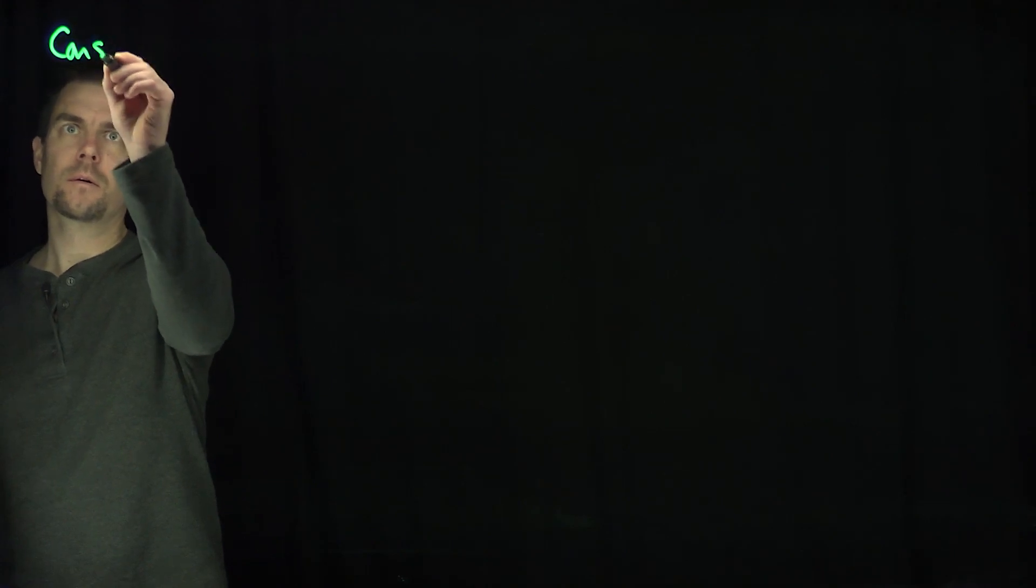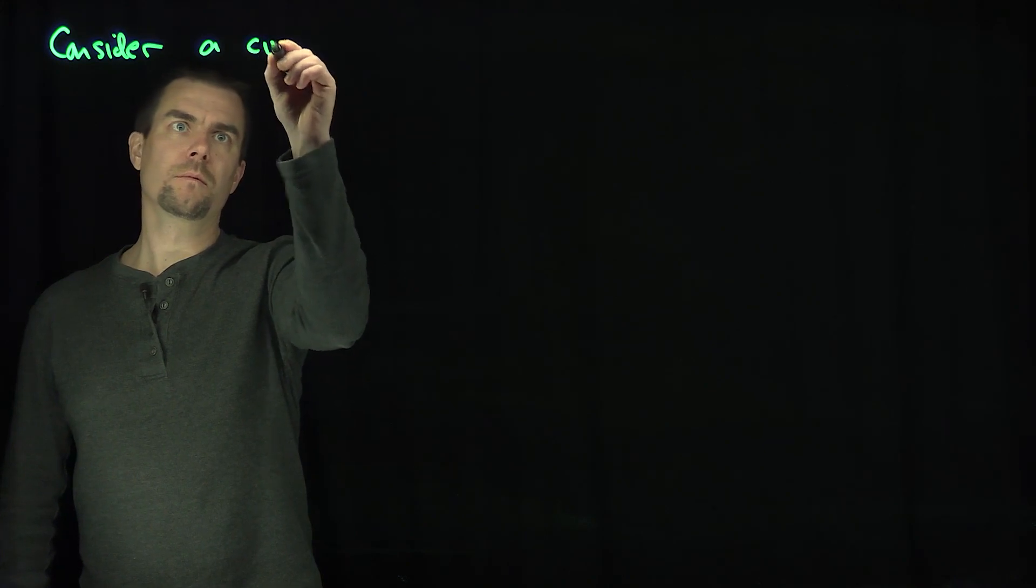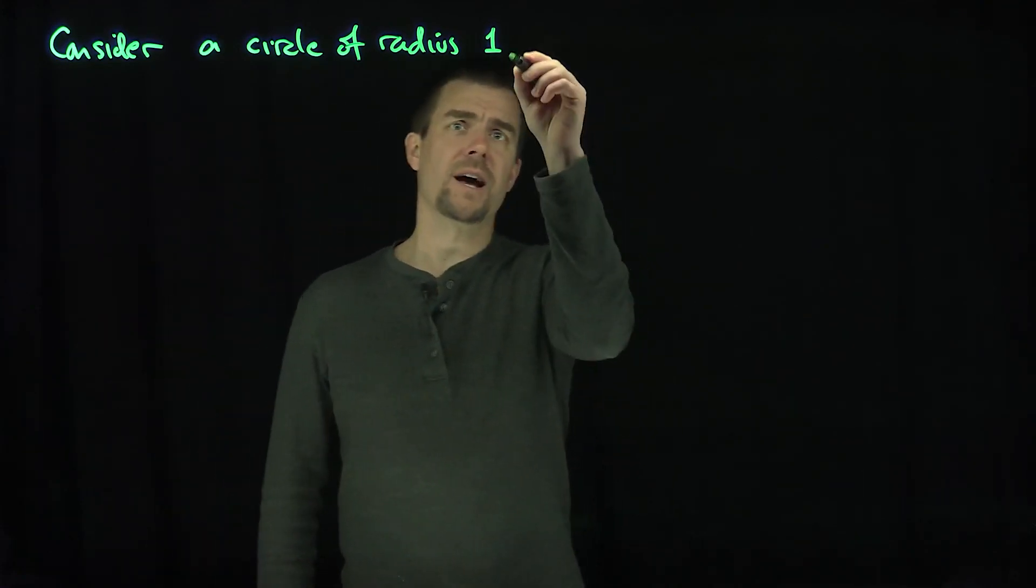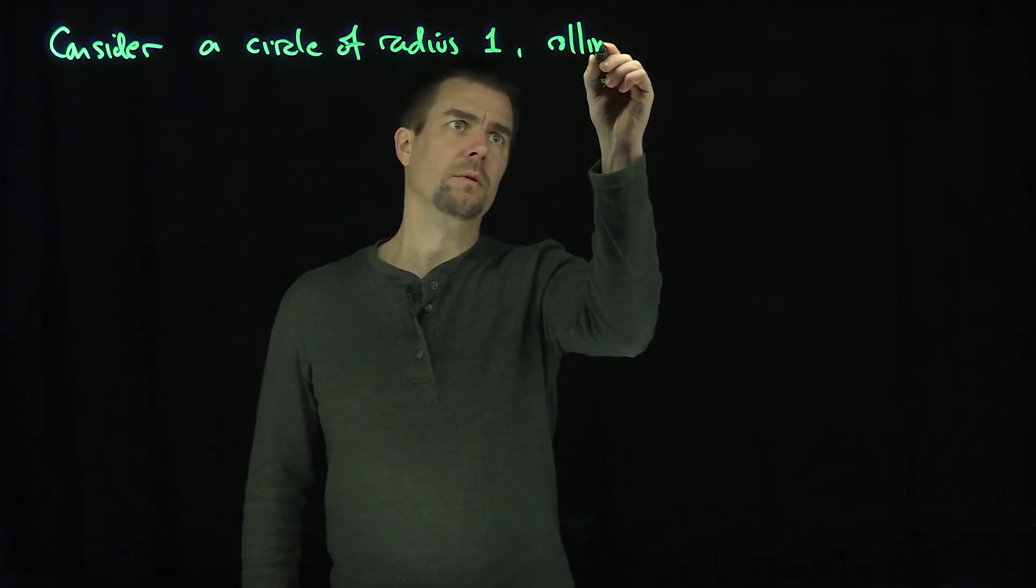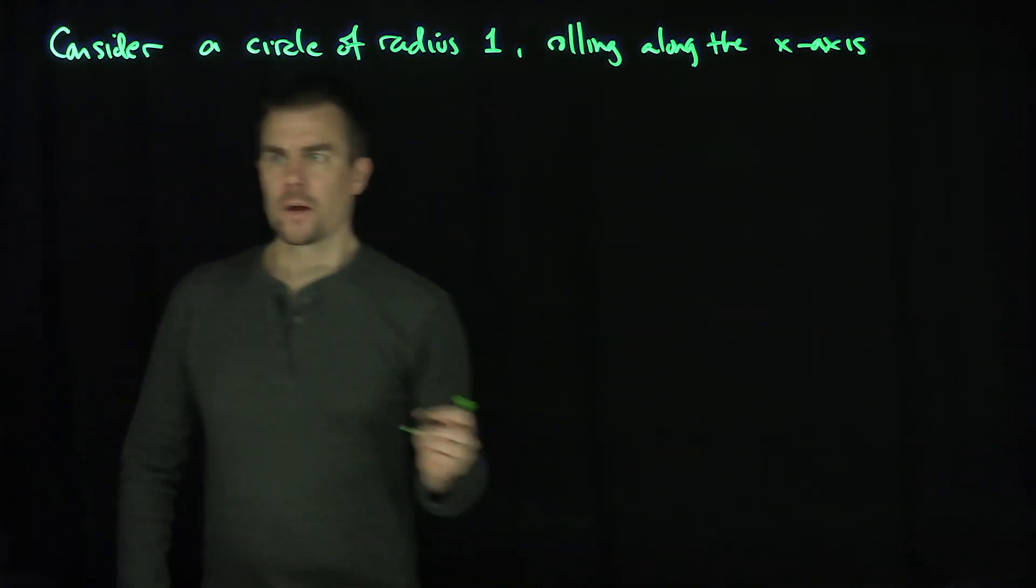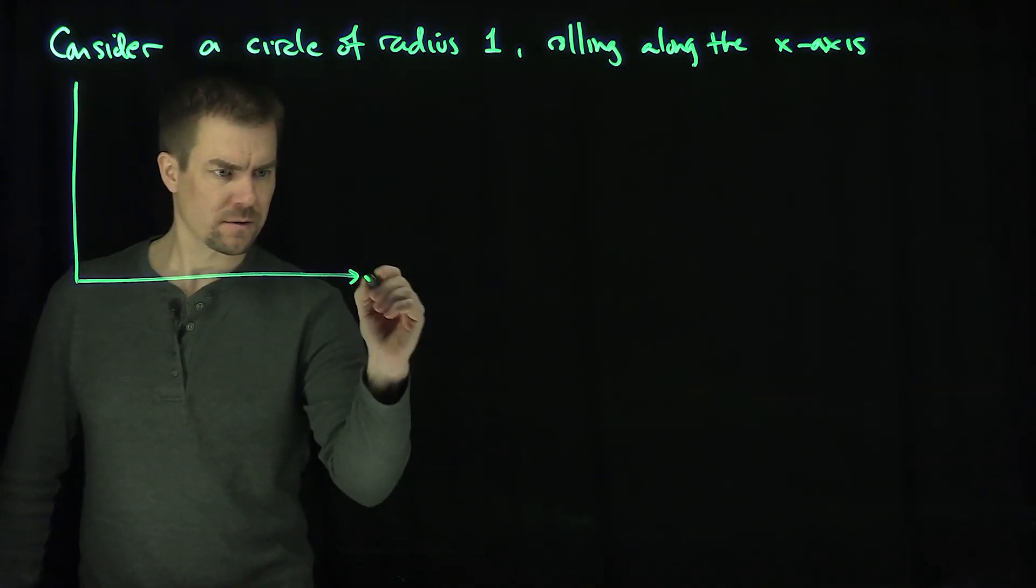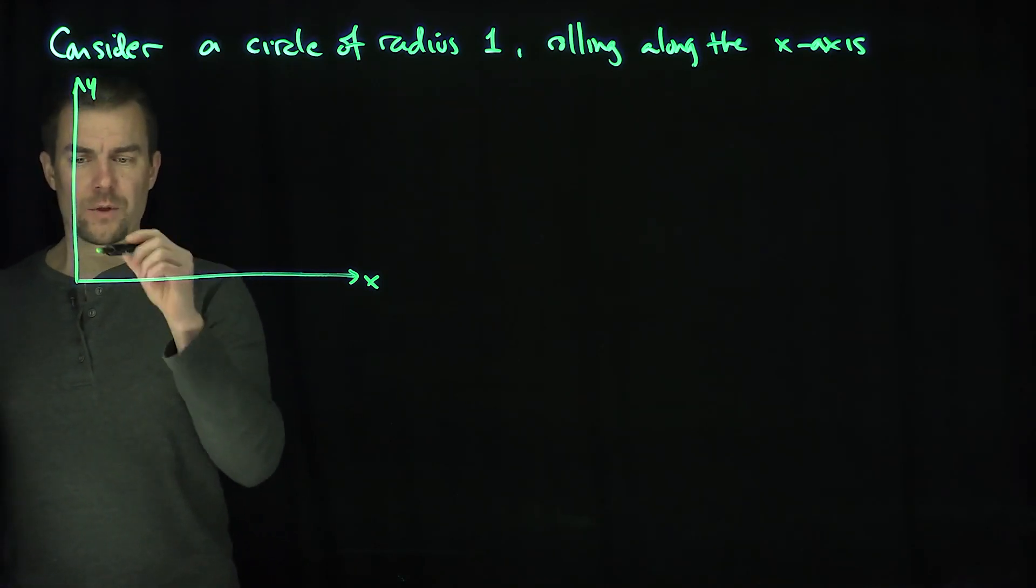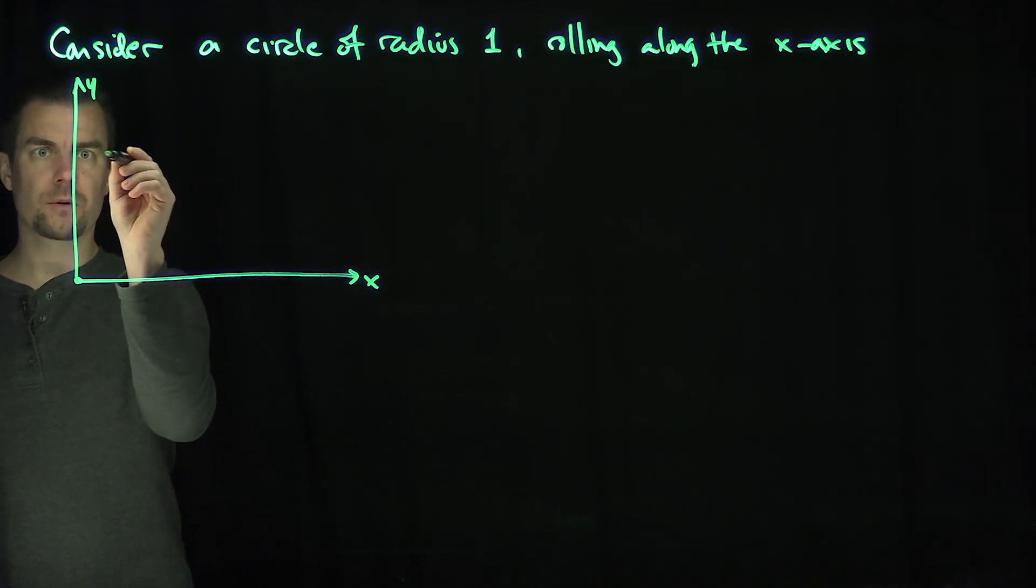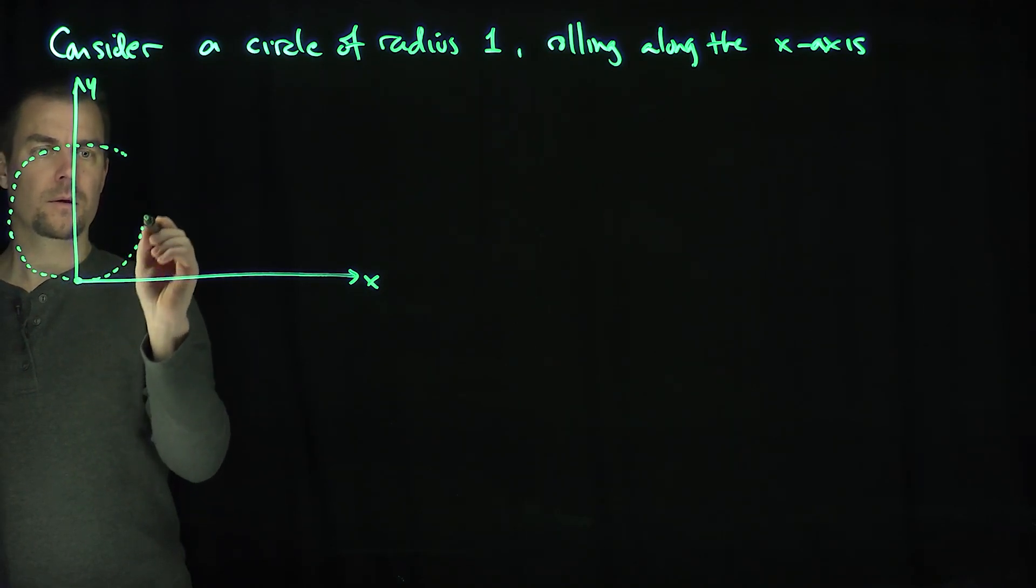So let's consider a circle of radius one, rolling along the x-axis. And so what I'm going to do is, here we go, there's the y-axis, there's the x-axis. And the circle's going to start over here at the origin, and I'm going to figure out what happens to a point. So here's my unit circle over here, so let's draw it like this.